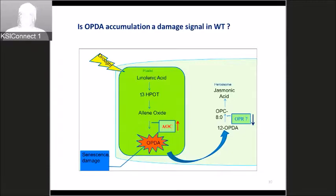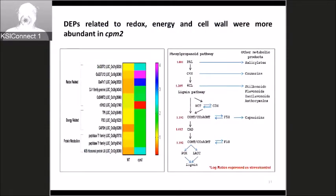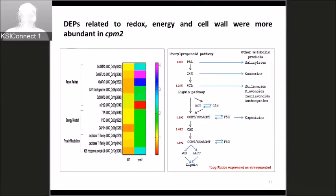We also identified a large number of differentially expressed proteins related to redox, energy, and cell wall. From the redox-related proteins, we found that CPM2 had an anti-oxidative mechanism that was not active in the wild type under drought. We also found large numbers of proteins related to the phenylpropanoid pathway — unique to CPM2 — shifting flux towards lignin biosynthesis, which is one of our speculations.